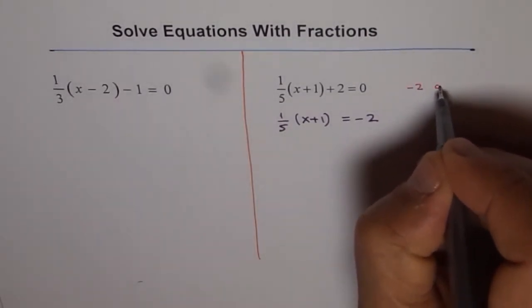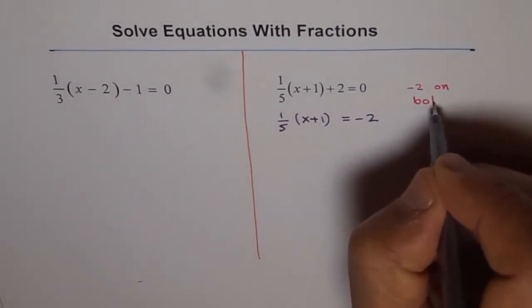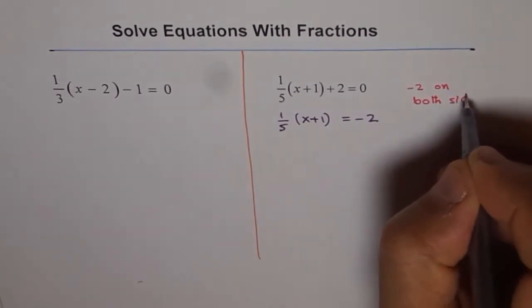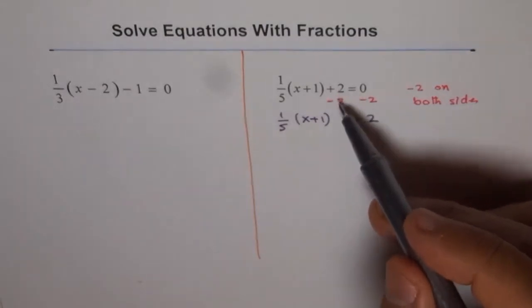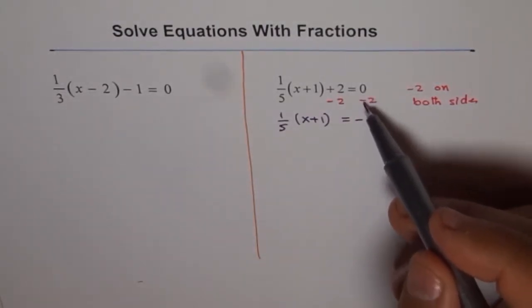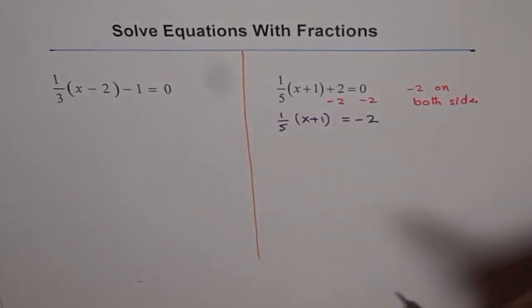So if I do minus 2 here and minus 2 here, then 2 minus 2 is 0 and 0 minus 2, we get minus 2 there. Perfect.